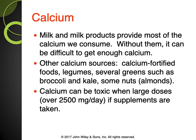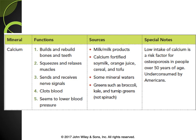Calcium builds and rebuilds bones and teeth, squeezes and relaxes muscles, sends and receives nerve signals, clots blood, and seems to lower blood pressure. Sources of calcium include milk and milk products, calcium-fortified soy milk, orange juice, cereal, and tofu. I personally get calcium from fortified orange juice and fortified soy milk since I'm not a big milk drinker. Definitely also get dark leafy greens for calcium.